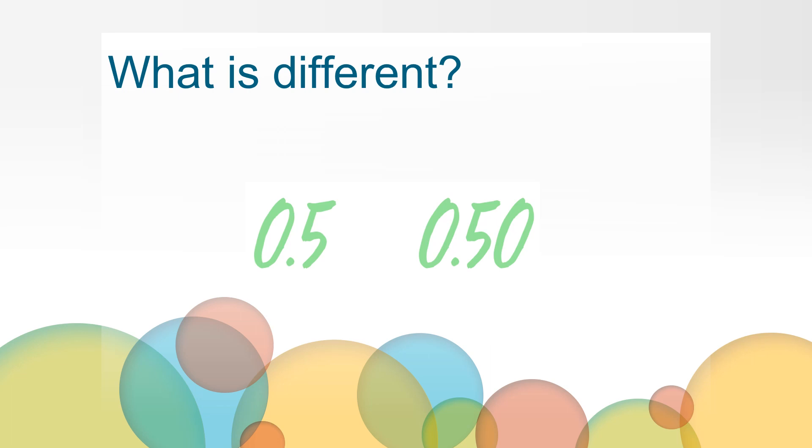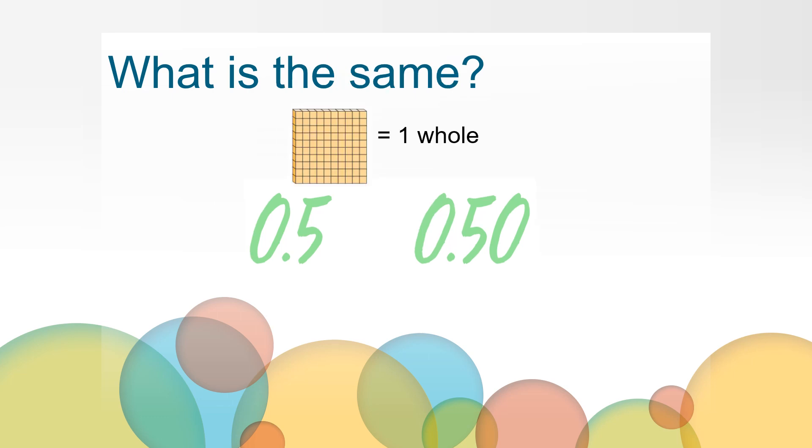What is different about these two numbers? We say these numbers differently. 0 and 5 tenths. 0 and 50 hundredths. And the second number has two zeros in it.